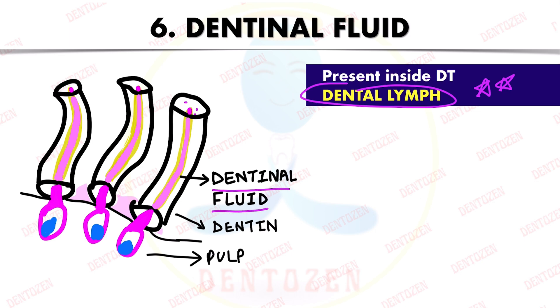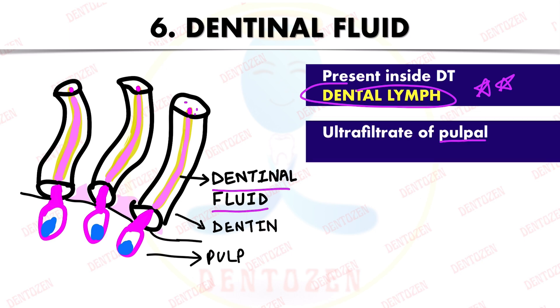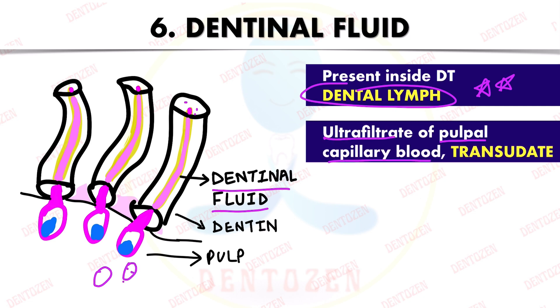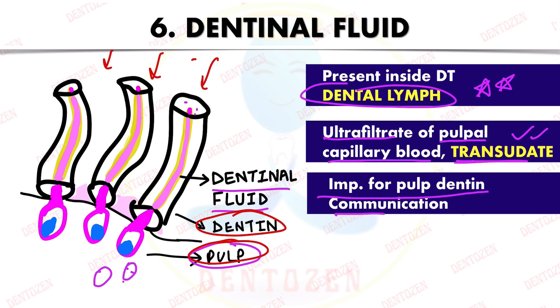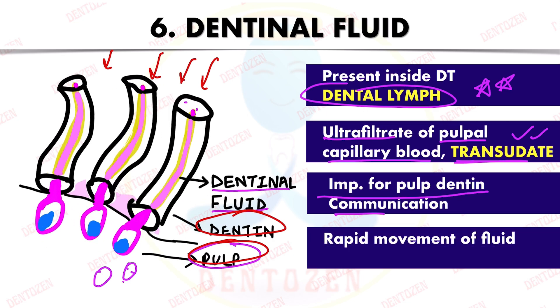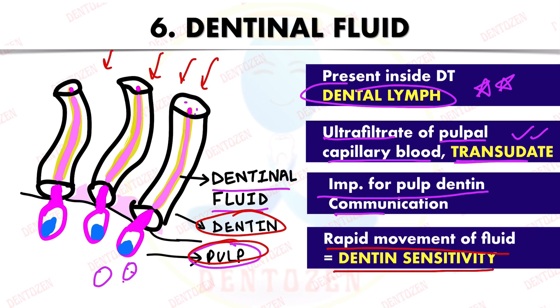Dentinal fluid is present around the odontoblastic process, coming from the pulpal capillary blood through ultrafiltration — so it is an ultrafiltrate of pulpal capillary blood and considered a transudate. Its role is important for pulp-dentine communication. Whenever there is any external force or factor, there can be rapid movement of this fluid, which can lead to dentine sensitivity.